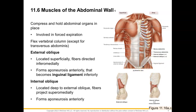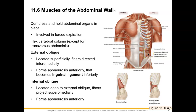Deep to the external oblique — layered underneath it — we have the internal oblique muscle, which we can also see here with just a small portion of its muscle fibers. Its fibers are going to extend superior medially, and it too is going to form an aponeurosis anteriorly.